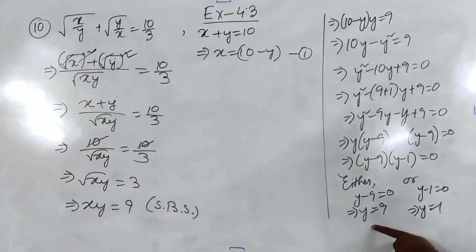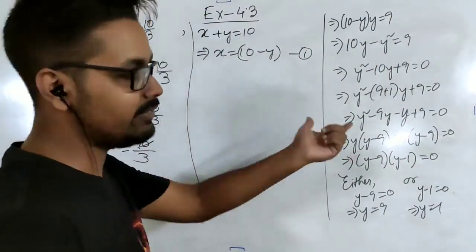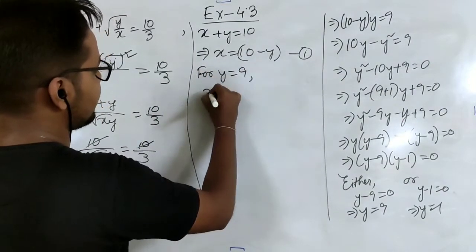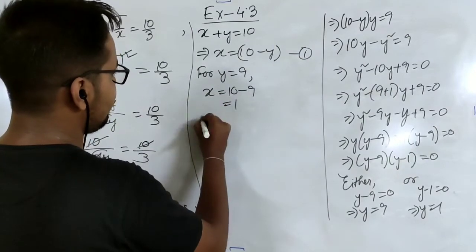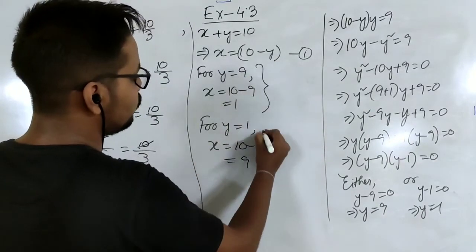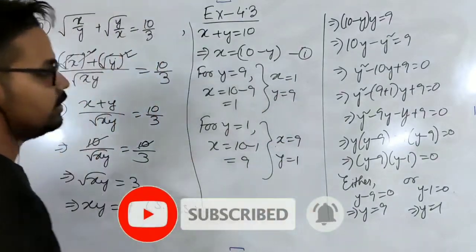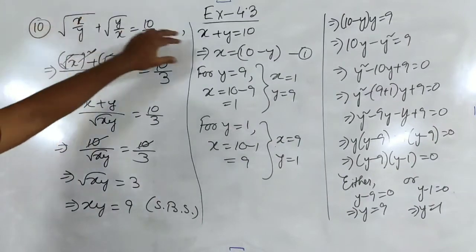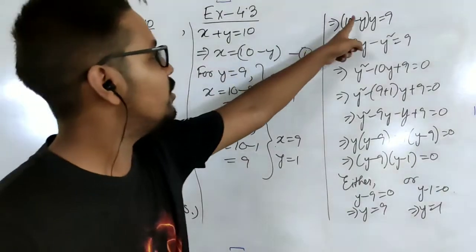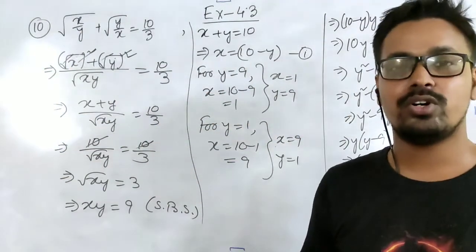Using equation 1 to find x: for y equal to 9, x equals 10 minus 9 which is 1; for y equal to 1, x equals 10 minus 1 which is 9. So the two solution sets are x equal to 1 and y equal to 9, or x equal to 9 and y equal to 1. A very simple type — take LCM, solve the quadratic, and get two sets of values.